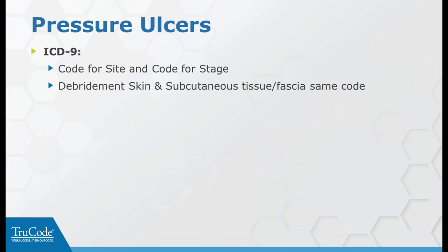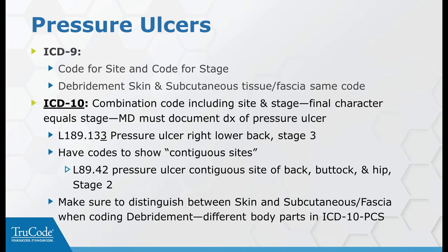For pressure ulcers: in ICD-9, there was one code for the site and one for the stage, with debridement of skin and subcutaneous tissue rolled together. In ICD-10, combination codes show the site and stage in one code, with the final character showing the stage of the pressure ulcer. For debridements, you must clarify the difference between skin or subcutaneous tissue and fascia.